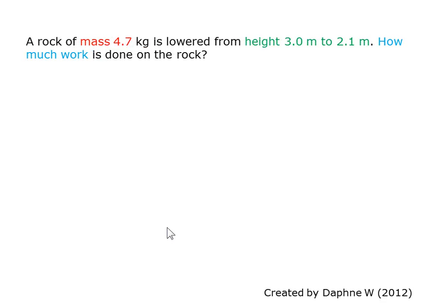A rock of mass 4.7 kg is lowered from a height of 3 m to 2.1 m. How much work is done on the rock?